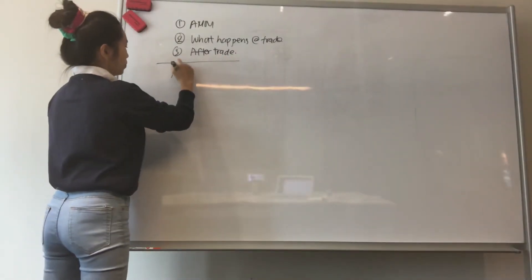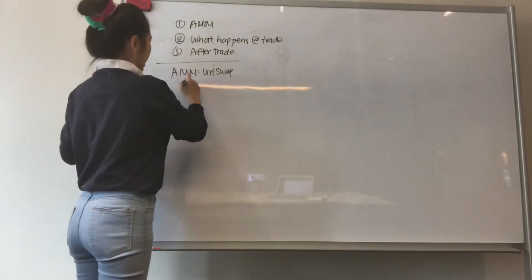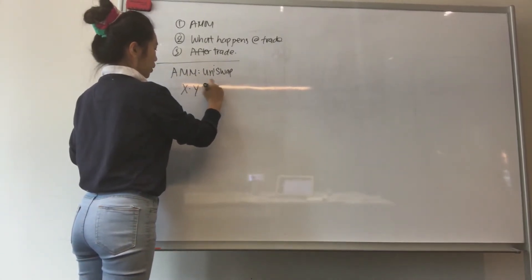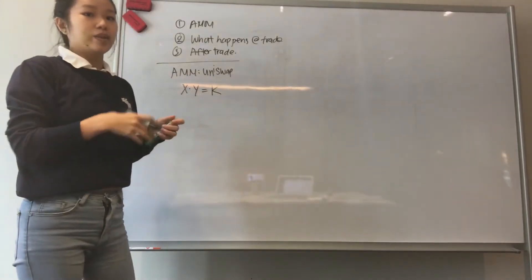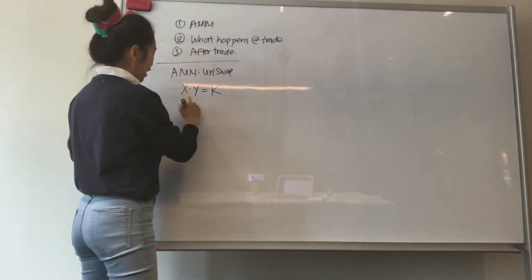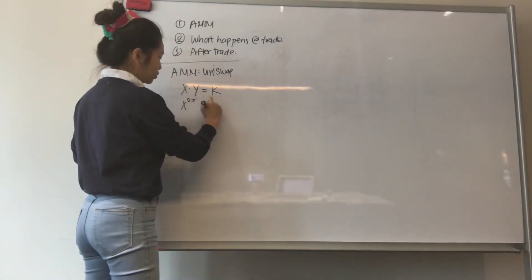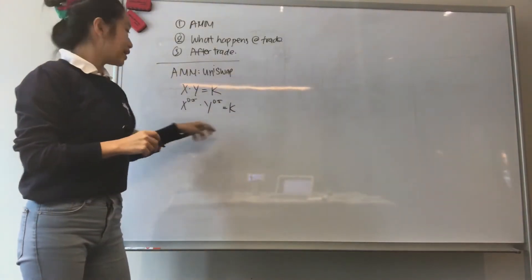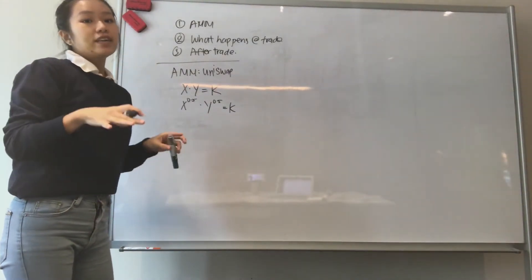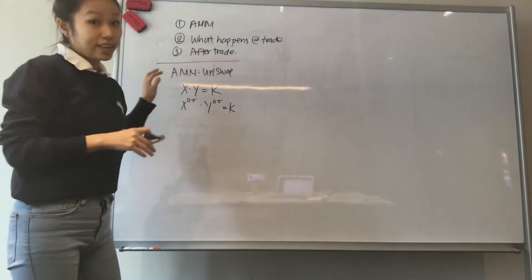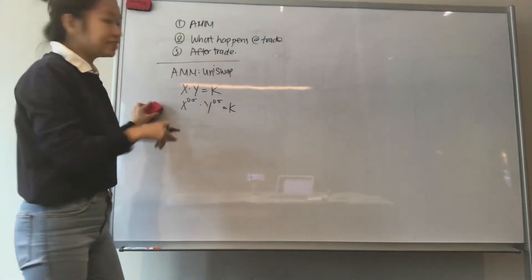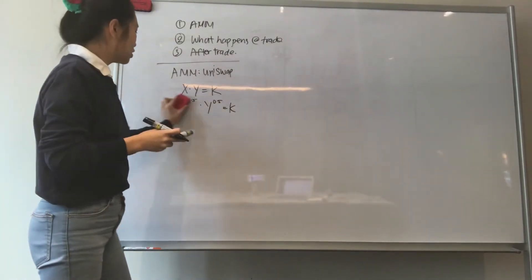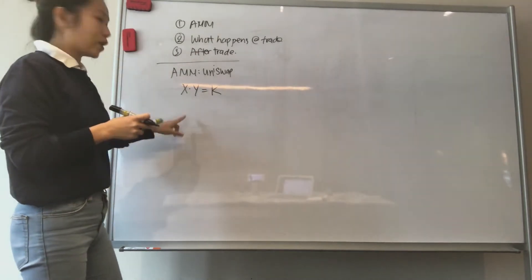So Uniswap AMM is very simple, it's just x times y equals k. I mean technically it is x times y times k because they are the same thing and k is just a constant. But let's not make it so complicated, it is the same thing, but since it's algebra and just numbers, you can just use x times y times k.